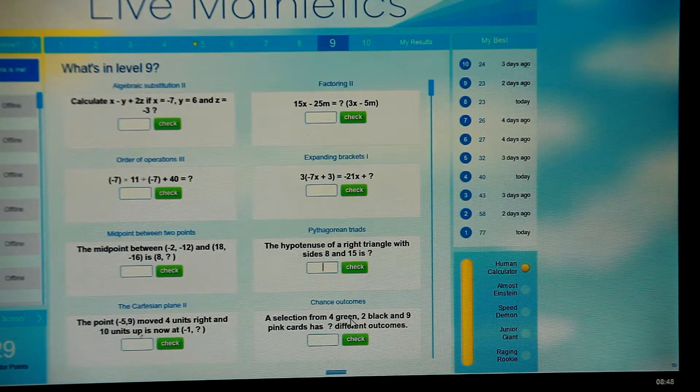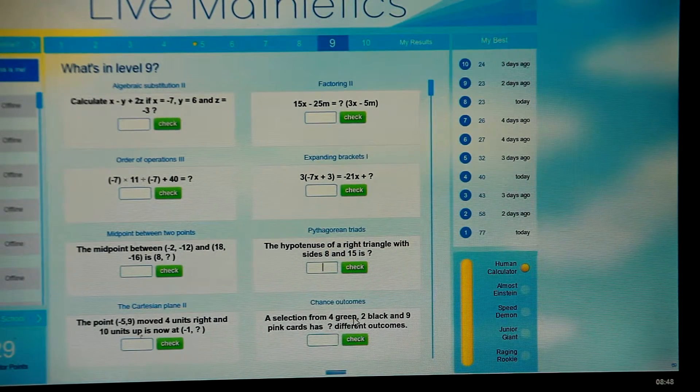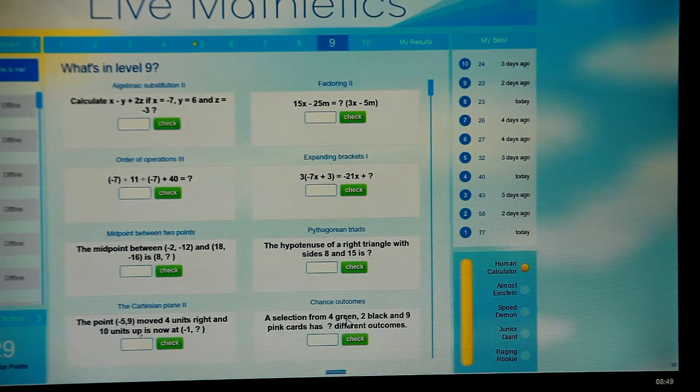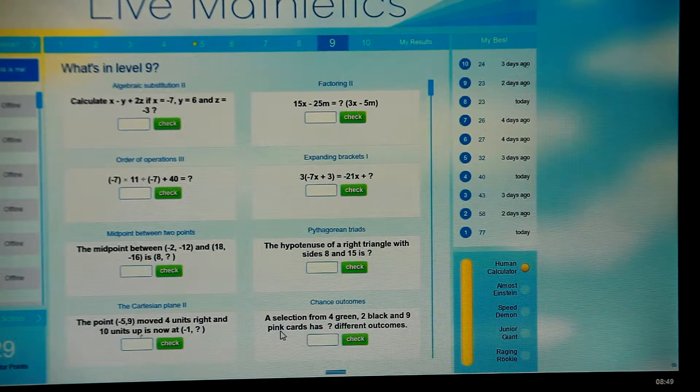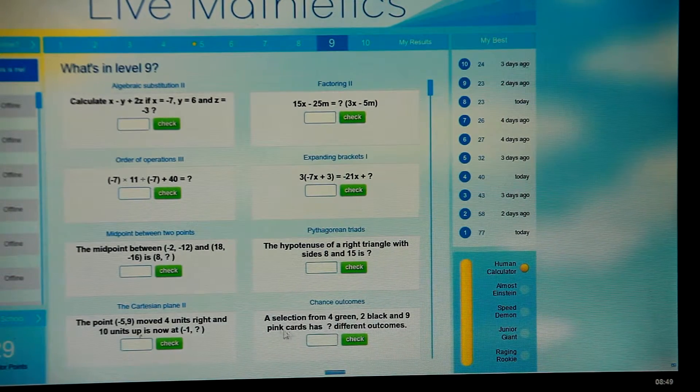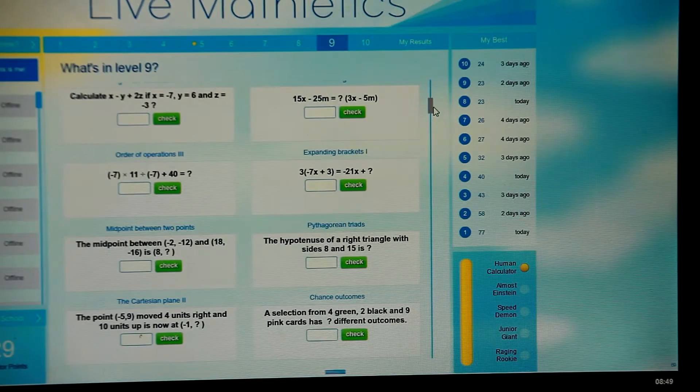These ones are quite straightforward, but they're talking about just selecting one out of these various cards. So you've got green and black and pink, so you've got just three outcomes. You could just basically see that one quite quickly.